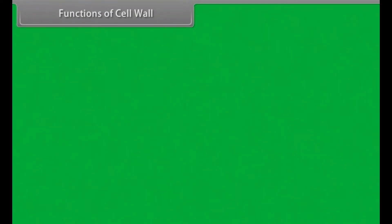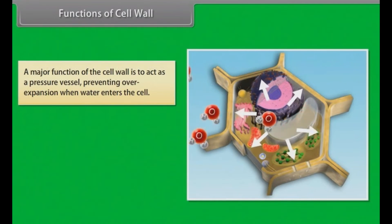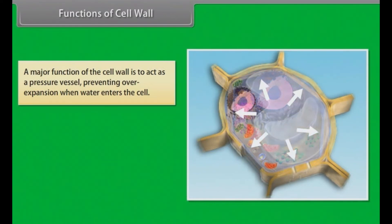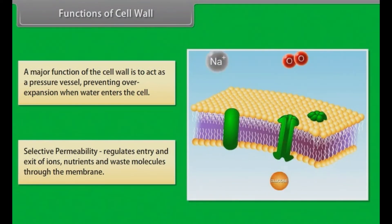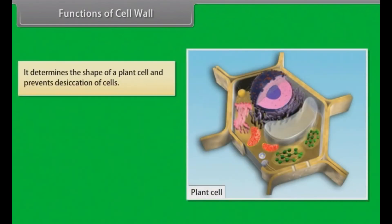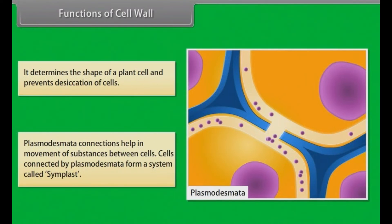Functions of cell wall. A major function of the cell wall is to act as a pressure vessel, preventing overexpansion when water enters the cell. Selective permeability: it regulates entry and exit of ions, nutrients, and waste molecules through the membrane. It determines the shape of a plant cell and prevents desiccation of cells. Plasmodesmata connections help in movement of substances between cells; cells connected by plasmodesmata form a system called the symplast.